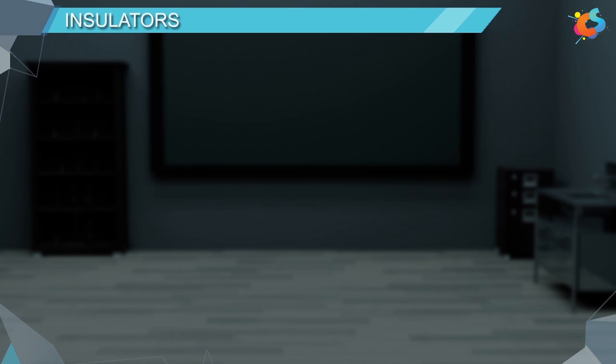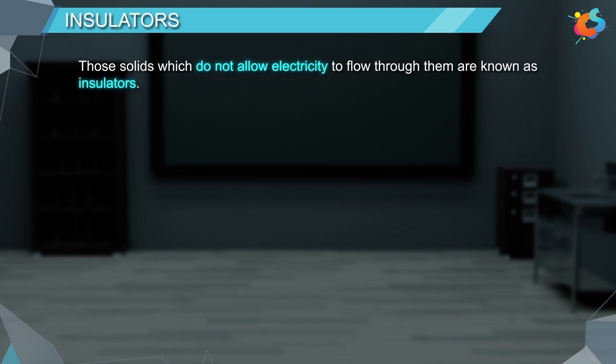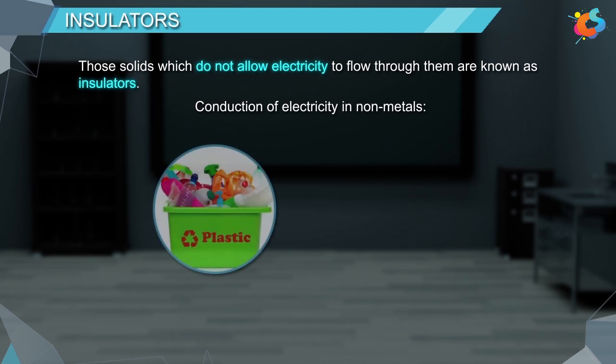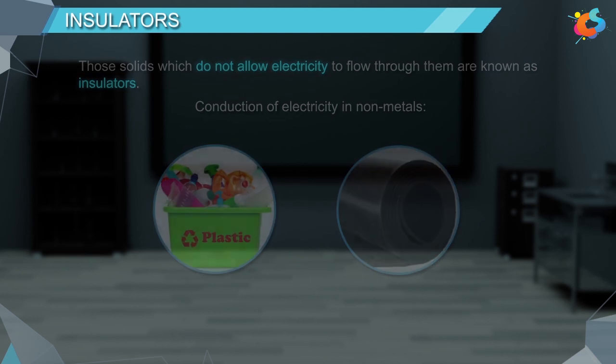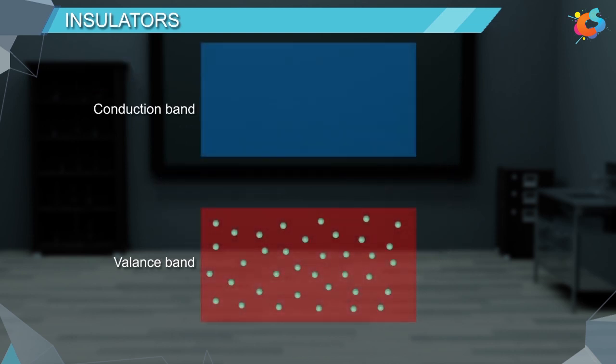Insulators. Those solids which do not allow electricity to flow through them are known as insulators. Conduction of electricity in non-metals: Non-metals like plastic and rubber do not conduct electricity. In these solids, the valence band is full while the conduction band is empty.